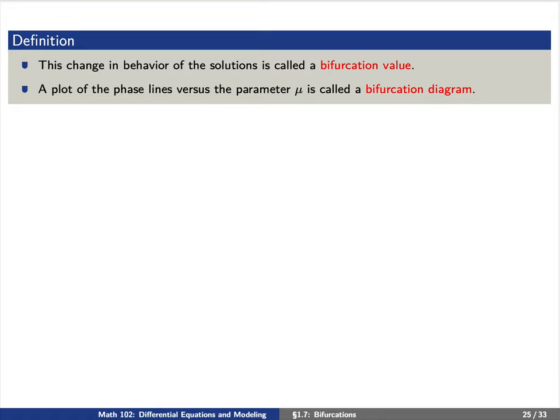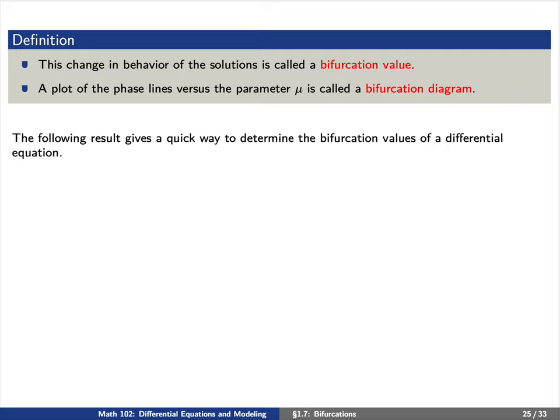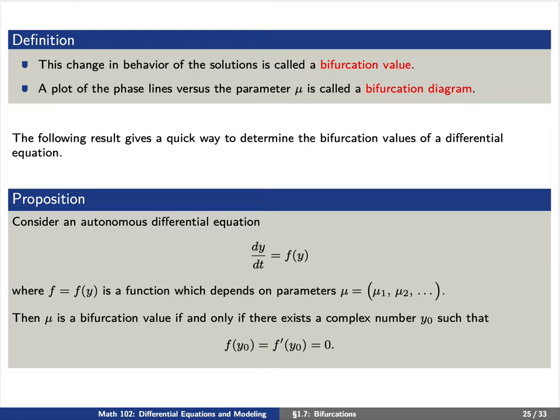Here's the definition again, along with a quick way to determine bifurcation values. Consider an autonomous equation dy/dt = f(y; μ₁, μ₂, …), where f depends on a collection of parameters. Then a parameter value is a bifurcation value if and only if there exists a value y₀ such that f(y₀) = 0 and f'(y₀) = 0. So we are not only finding an equilibrium value, but one where the derivative vanishes as well — giving us a system of equations to solve for both y₀ and the parameters μ.